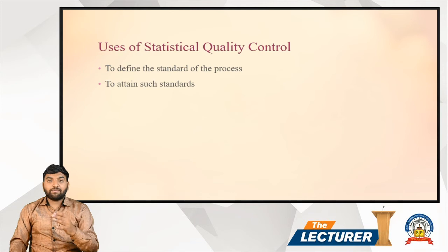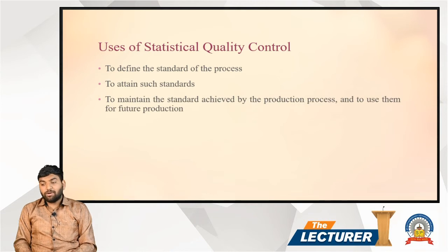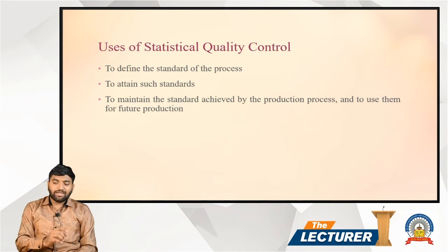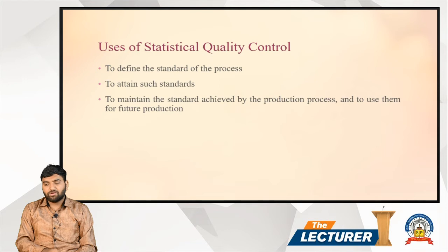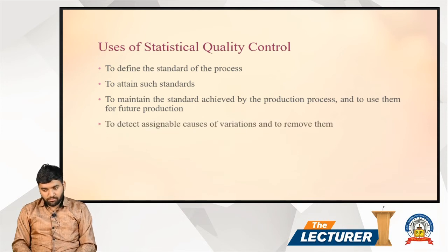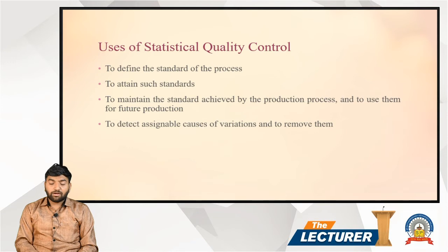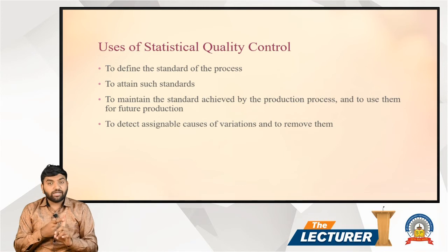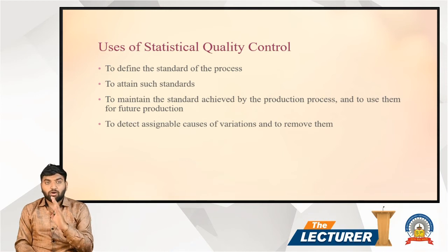Customers will automatically be attracted to the product. Another use is to maintain the standard achieved by the production process and to use them for future production. Additionally, SQC helps to detect assignable causes of variation — whether machinery, workers, or raw materials — and to identify and remove or replace them.